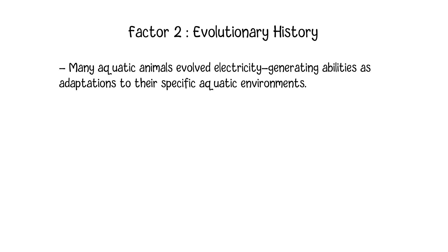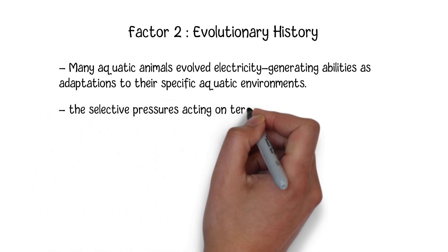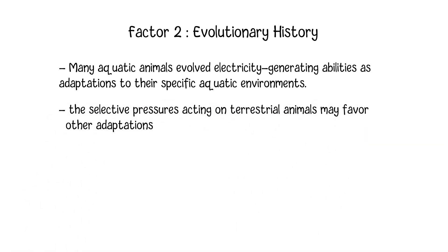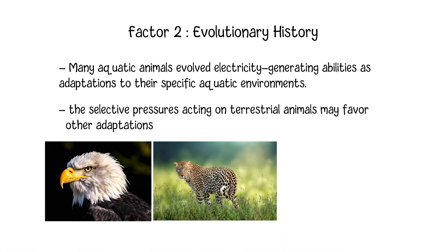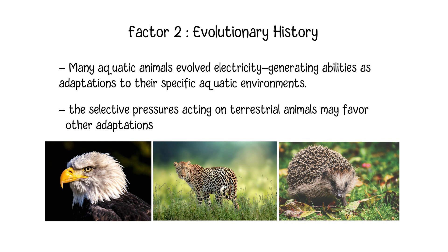During millions of years of evolution, the selective pressures acting on terrestrial animals may favor other adaptations over the development of electricity-generating organs. Terrestrial animals have evolved a wide range of sensory mechanisms, locomotion strategies, and defensive mechanisms suited to their environments, which may provide sufficient advantages without the need for electricity generation.